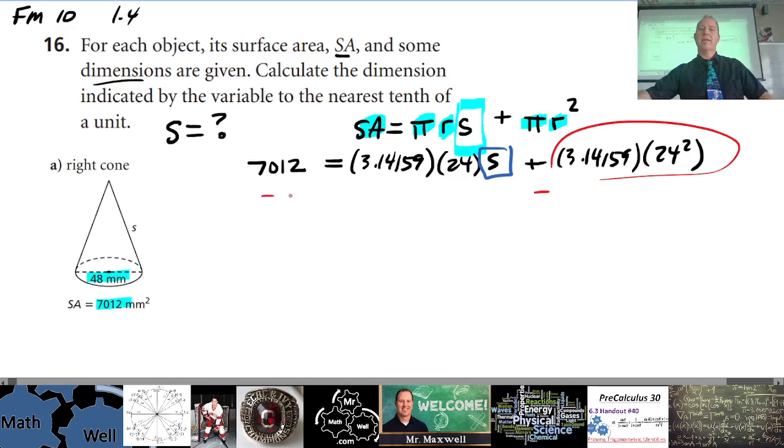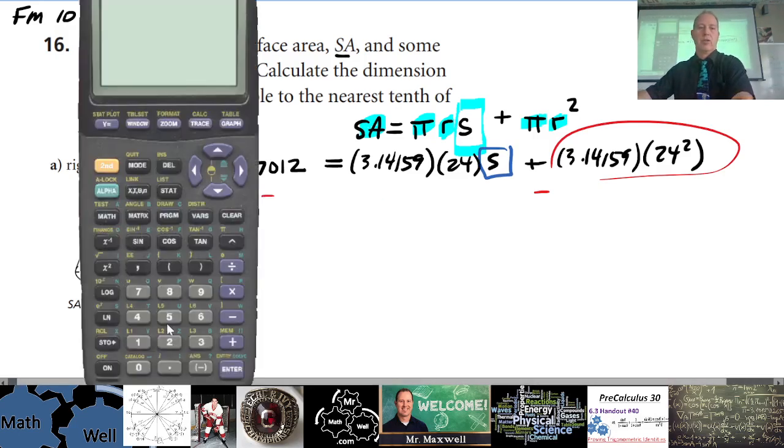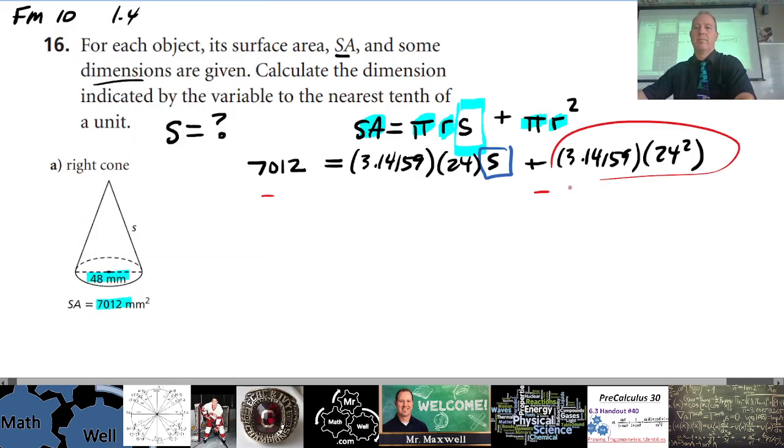Okay, let's do that on our calculators here. So I'll turn that on, let's clear that off. So π times 24² is 1809.557. So subtract that from both sides and that